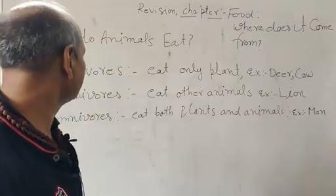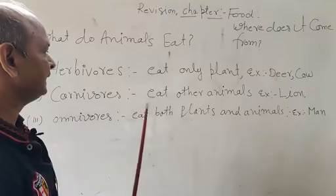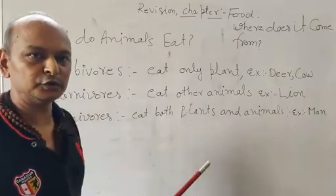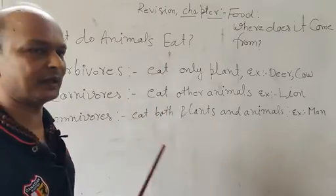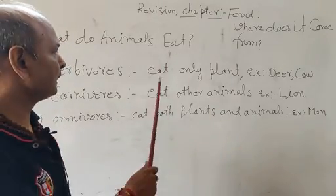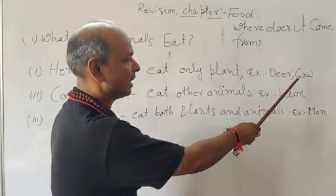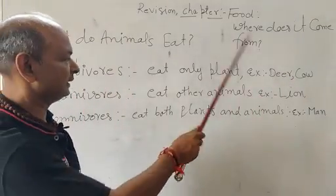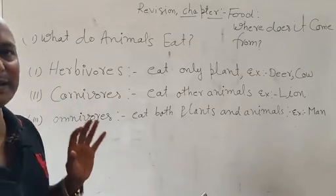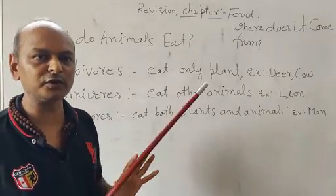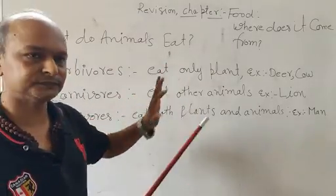The first category is Herbivores. Herbivores is the term for organisms that eat only plants. These organisms are called herbivorous animals.